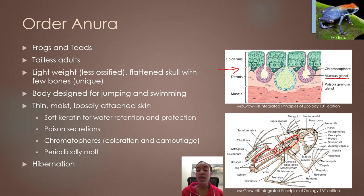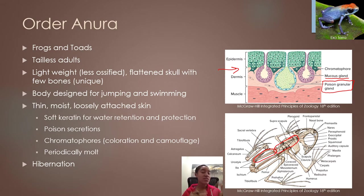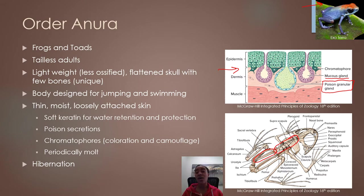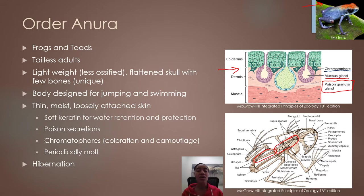Anurans also have poison glands that excrete poisons coating the body, which help protect from predators. A variety of anurans have various potencies of poison — some, like poison dart frogs, have very potent poisons on their skin that humans have made use of throughout history. Others have a far milder poison that won't kill us but is still an effective deterrent for predators. Anurans also have chromatophores in their skin that give them their color. These chromatophores can expand or contract and in combination with other skin elements produce colorations such as green, blue, orange, or yellow.